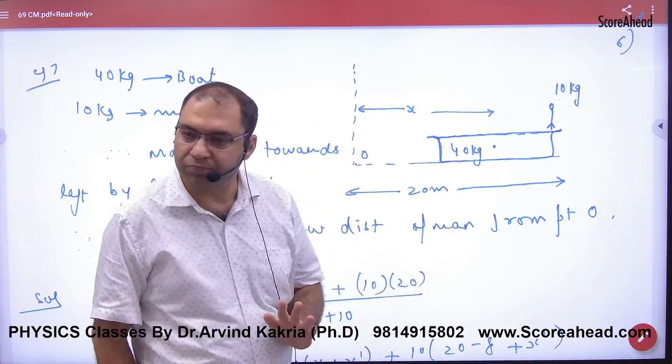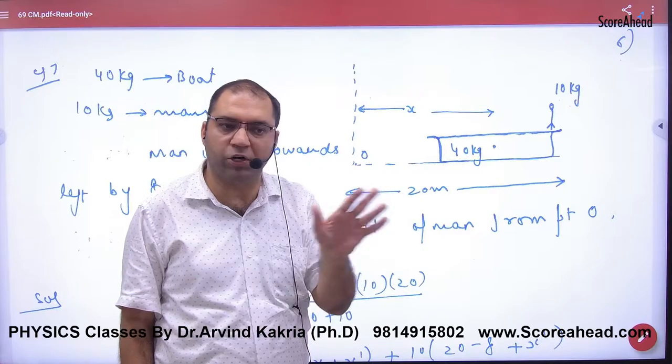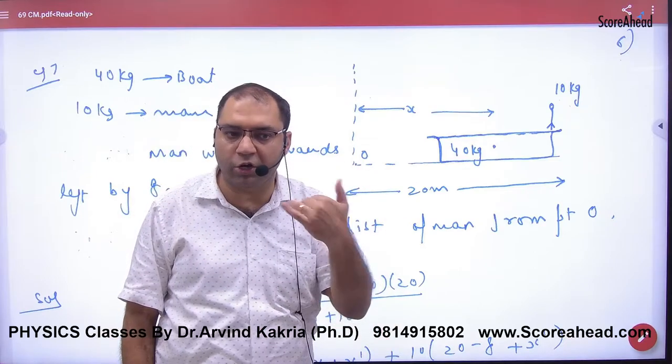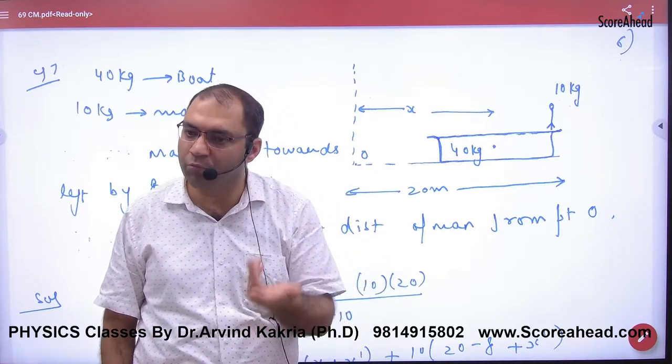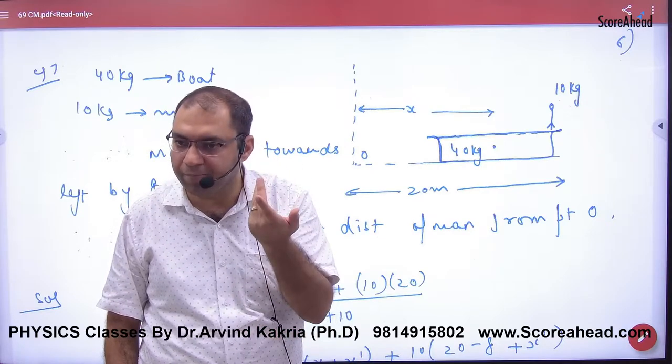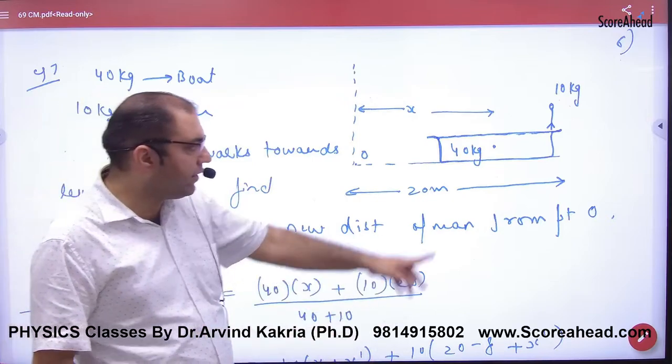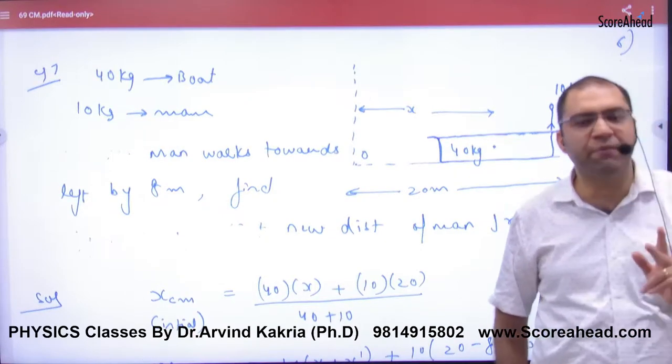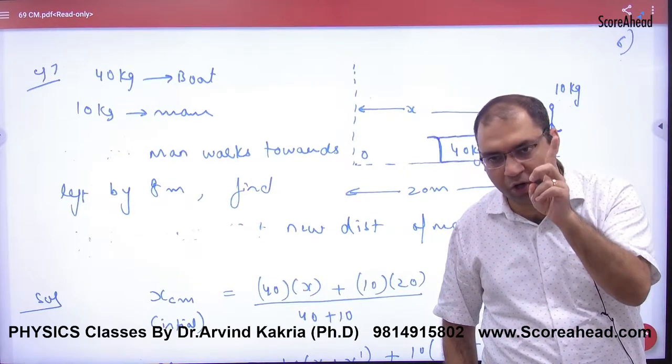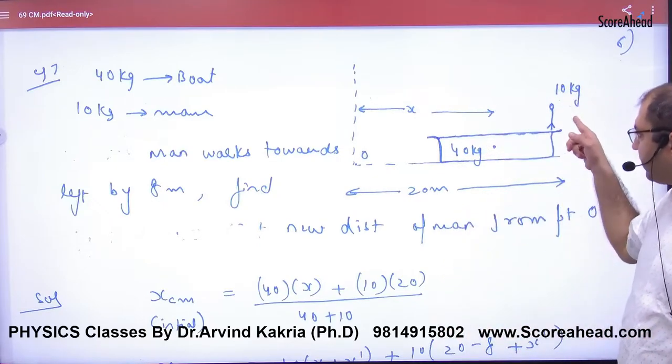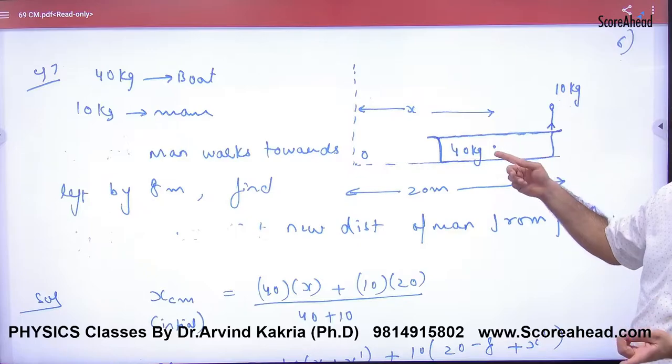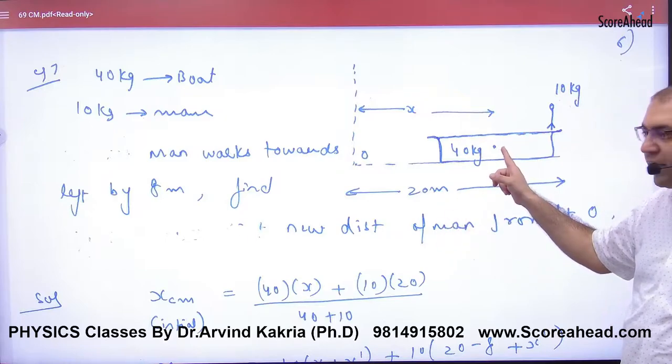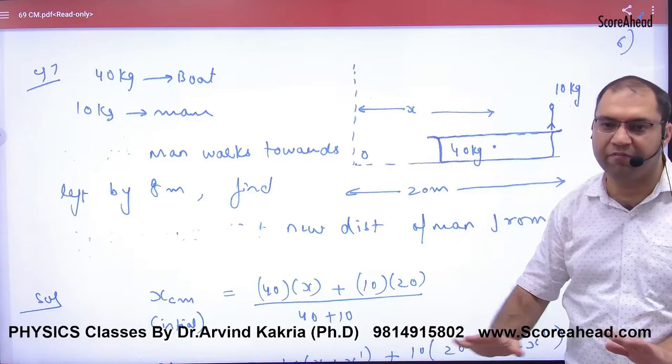First, the man is standing here. Take the center of mass of these two systems. Then man moves 8 meters, take the new center of mass. The center of mass position will remain the same, it will not change. The whole system center of mass - how many bodies? One man and one boat. Man's center is 20 meters, boat's center is at distance x.